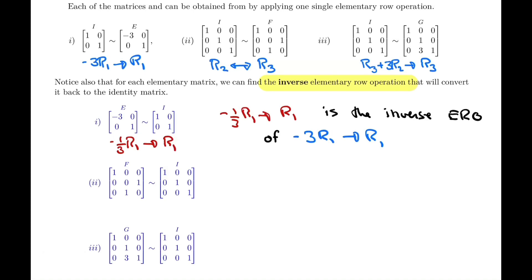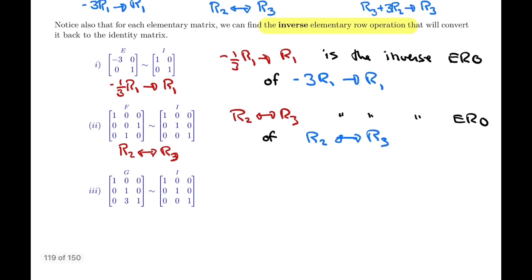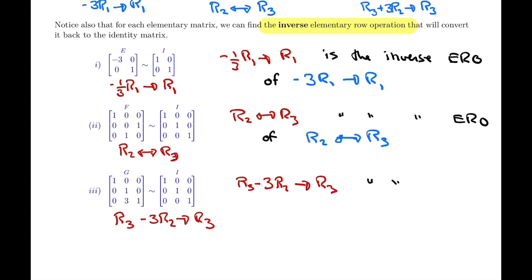For matrix F, to convert it back to I we swap row two with row three — which is the same operation we used originally. So row two interchange with row three is its own inverse. For matrix G, to go from G back to I, we apply row three minus three times row two as our new row three. So that operation is the inverse ERO of the one where we did row three plus three times row two.